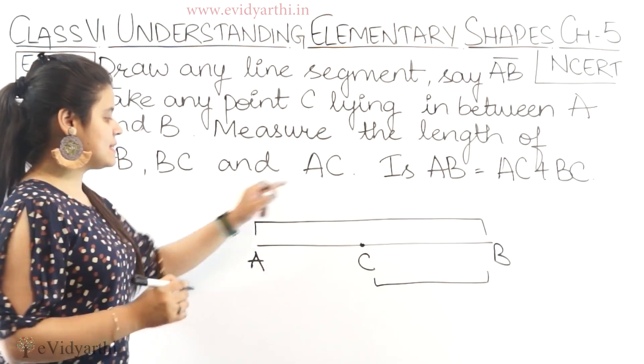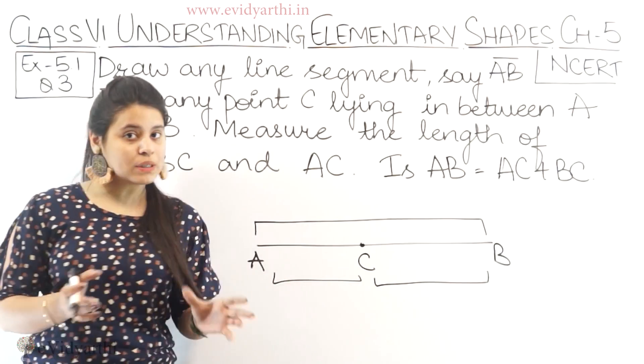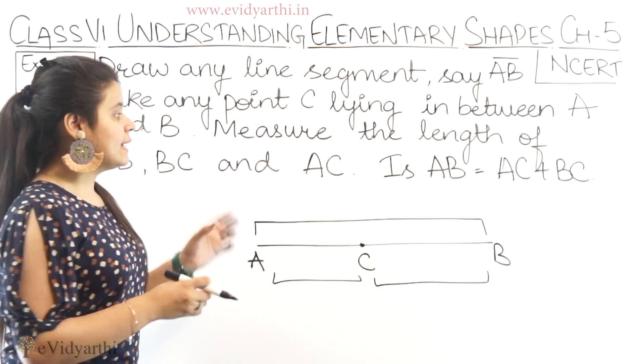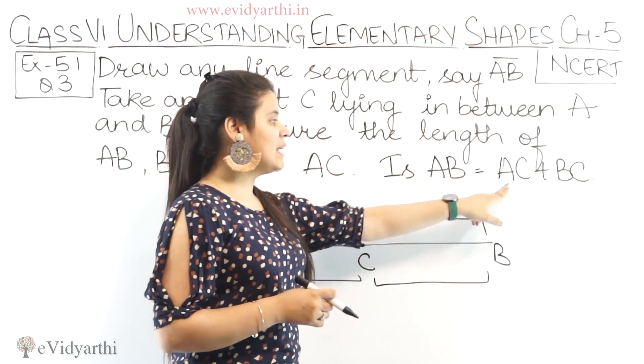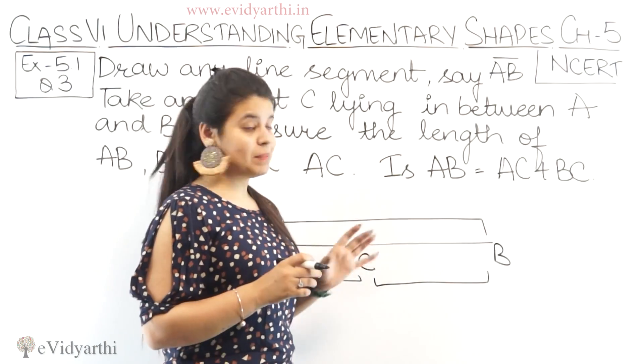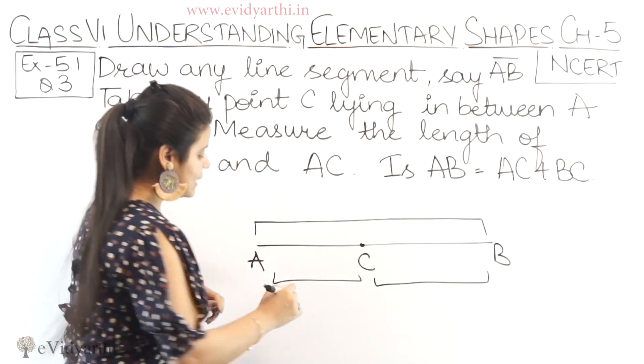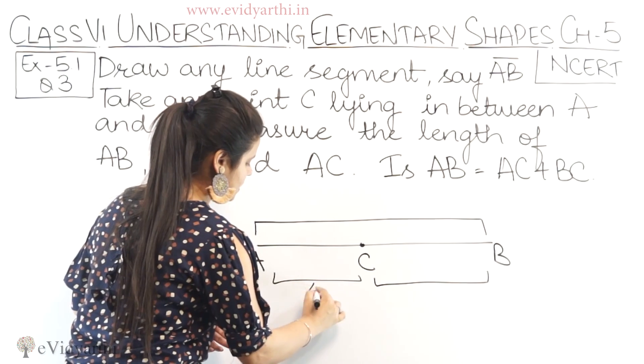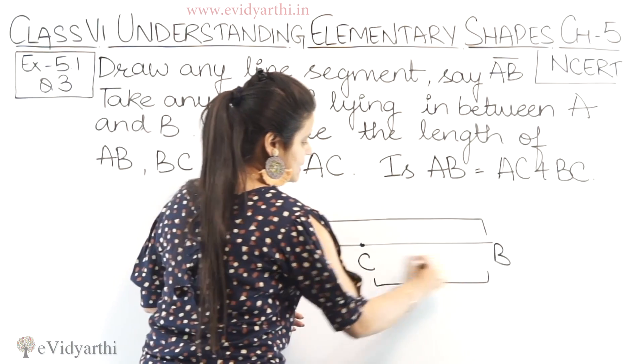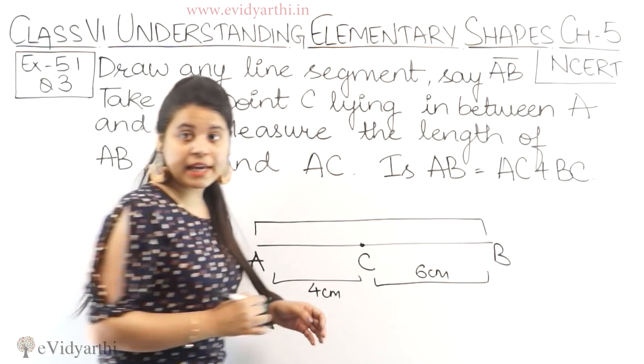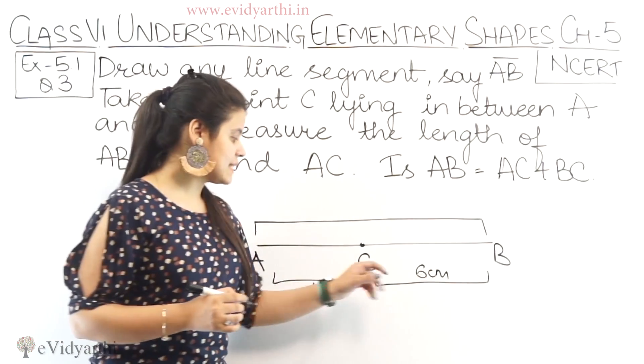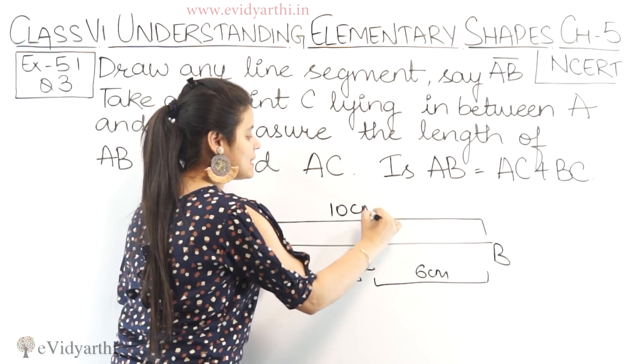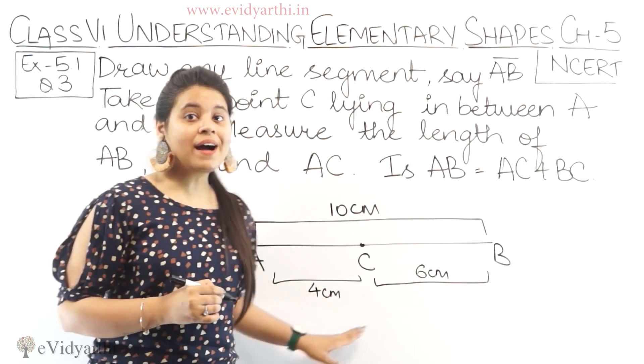So, 4 cm, 6 cm, when you measure AB, that will be 10 cm. That means this is the sum of both.